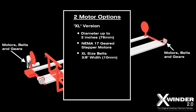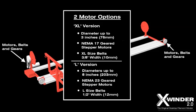The X-Winder 2 XL version ships with NEMA 17 geared stepper motors and can handle mandrels up to 3 inches in width. The X-Winder 2 L version ships with the larger NEMA 23 geared stepper motors and can handle mandrels up to 8 inches in width.